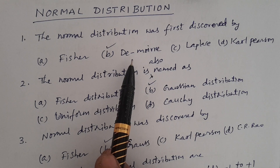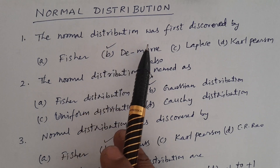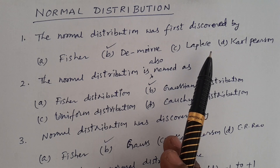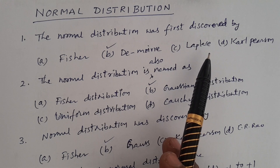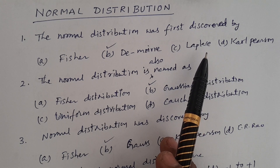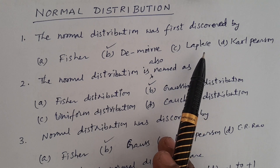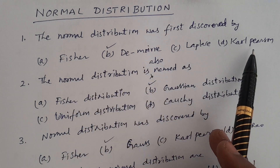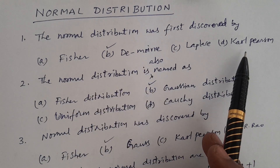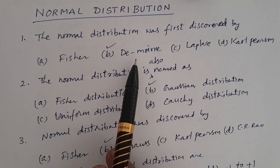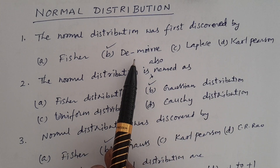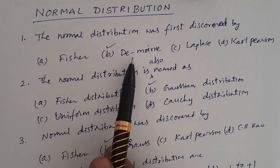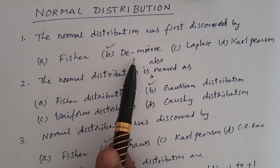In Telugu: The normal distribution was first discovered by whom? Options are Fisher, De Moivre, Laplace, Karl Pearson. The correct answer is De Moivre. De Moivre first discovered the normal distribution.